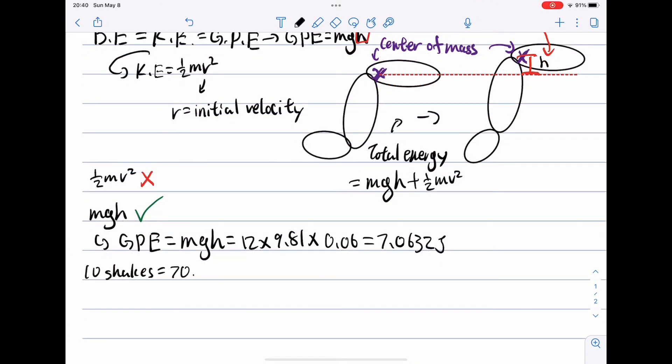This means that if you shake your leg 10 times, you use up 70.632 joules, 100 times, 706.32 joules, 1000 times, 7063.2 joules.